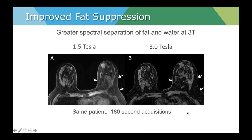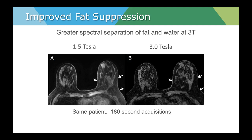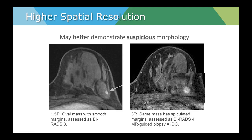We also tend to see greater spectral separation of fat and water, although there is increased chemical shift with 3 Tesla magnets. We can also see some improved resolution. For example, a mass on 1.5 Tesla looked oval and was considered probably benign. However, viewing it on 3T showed some spiculation in the margins, which changed the BIRADS assessment to a 4, and it turned out to be a small invasive ductal carcinoma. A side-by-side comparison of a benign fibroadenoma at 1.5 and 3T shows that slightly improved resolution allows visualization of dark internal non-enhancing septations — a classic feature of a fibroadenoma.